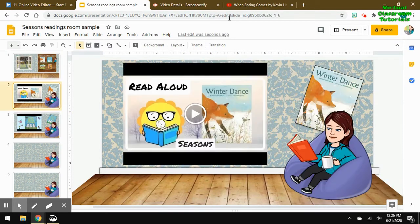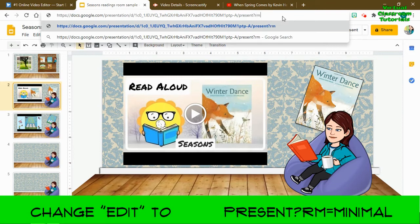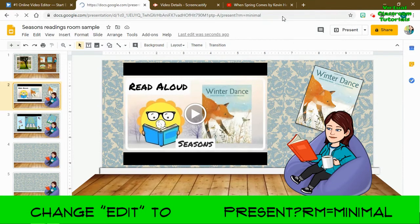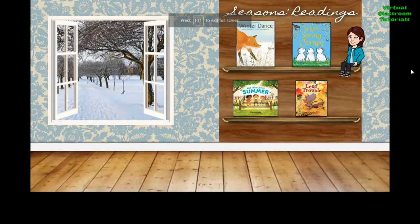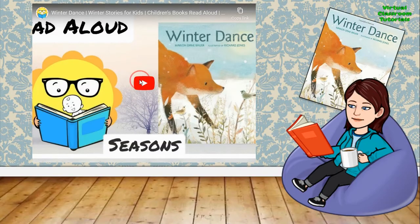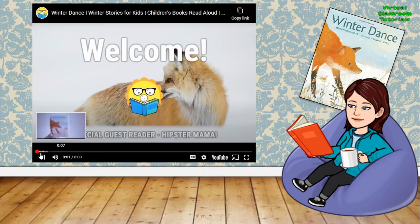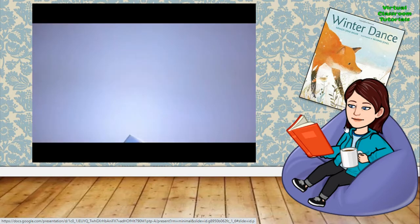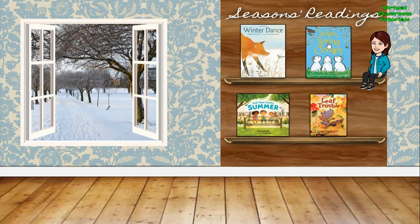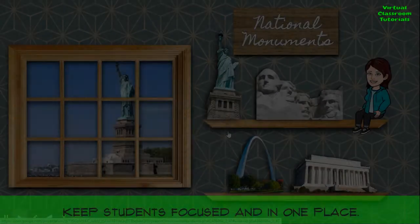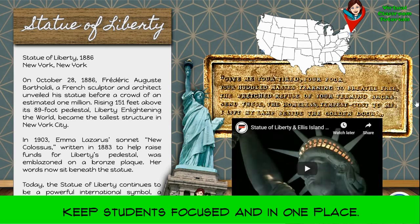Then I can repeat this process for each of my books. To preview, in your URL exchange the word 'edit' for 'present?rm=minimal'. You can see what the students might see if this were embedded in your website or shared in present mode. Students could click on a book cover and watch the video of the read-aloud. I would tell my students to click on me to return to the room — that could be a navigational norm. You can also add text, other images, and multiple videos, keeping students all in one place.